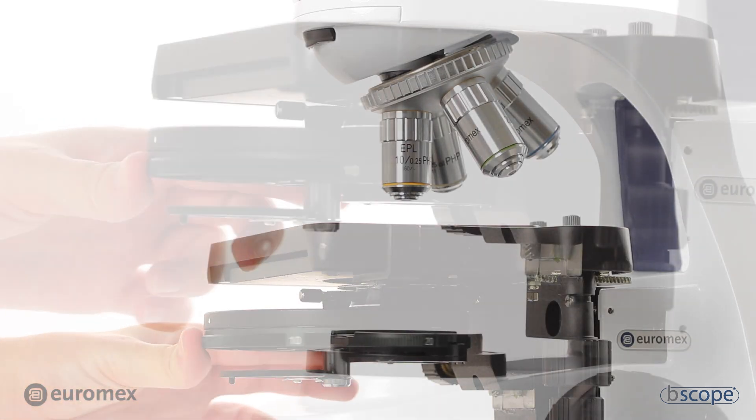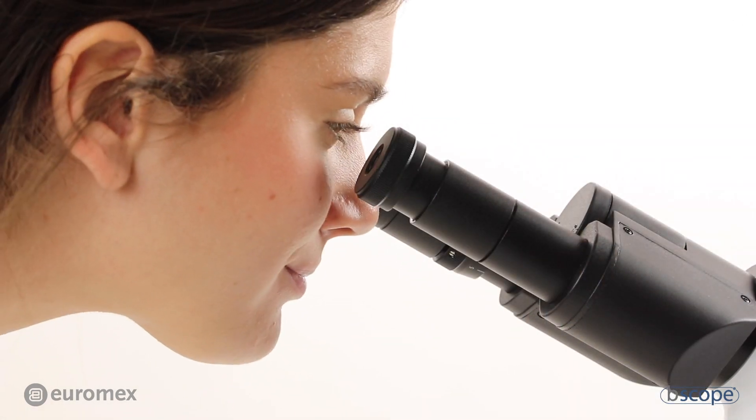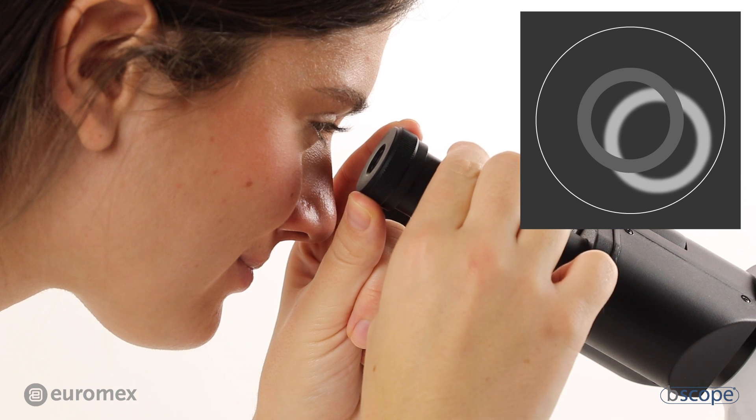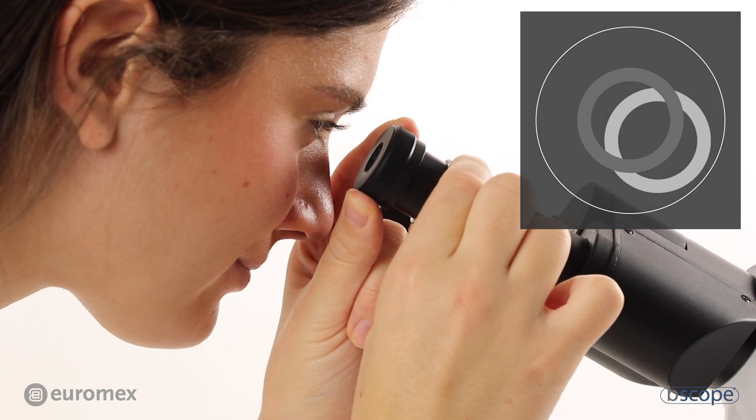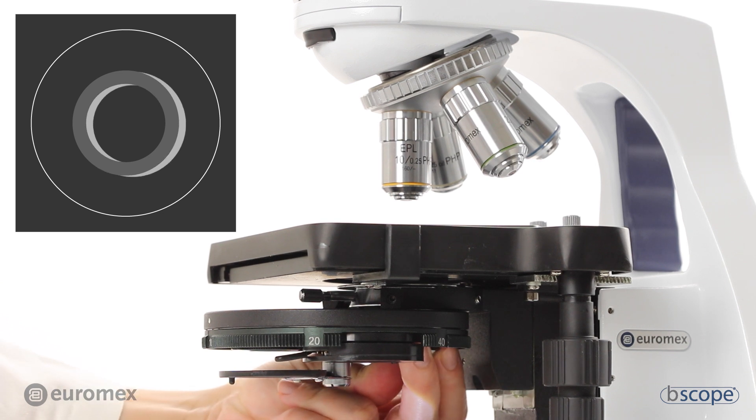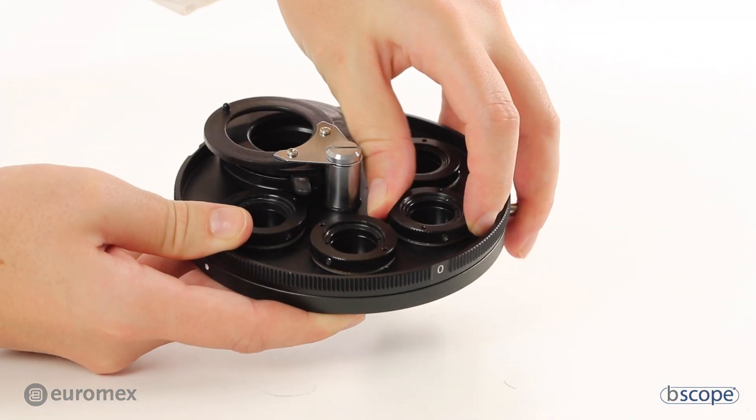Turn the selector to 10. Focus on the annulus, white ring, and adjust the annulus for the 10 times objective by moving it. This gives you an idea of what actually happens.